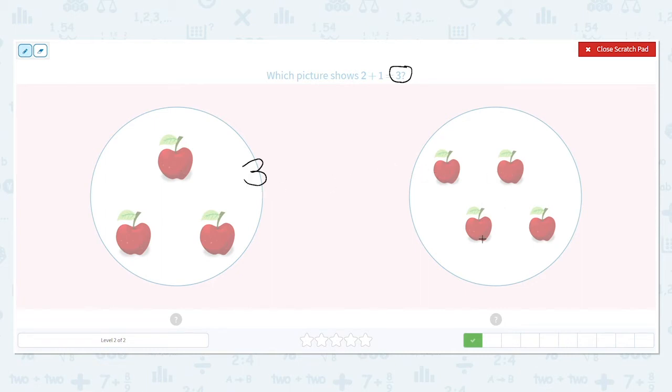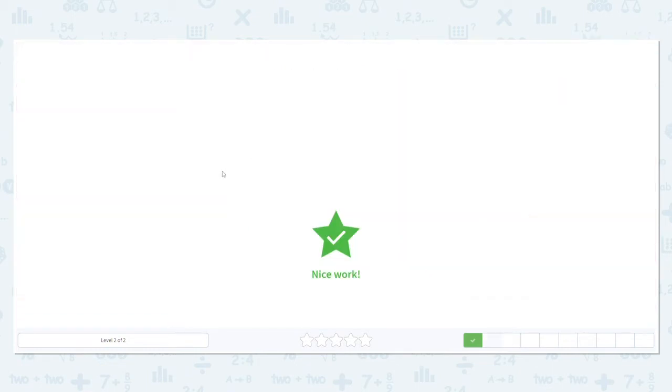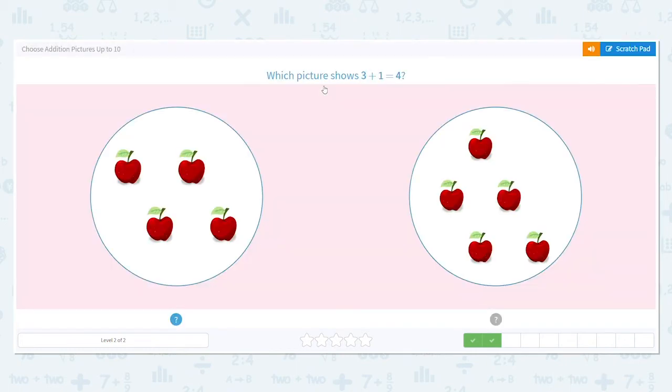1, 2, 3, 4. This one has 4. So which has 3 total apples? The one on the left? Good job. Let's do another one.